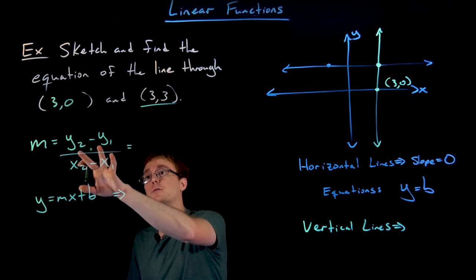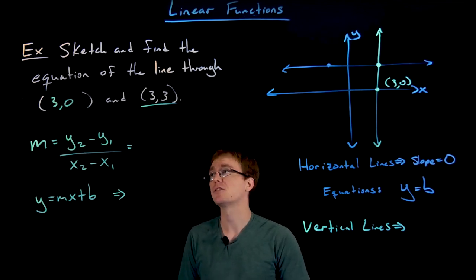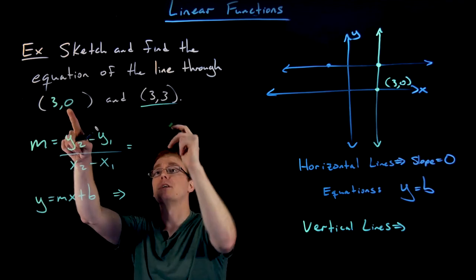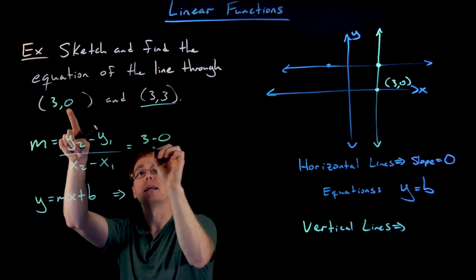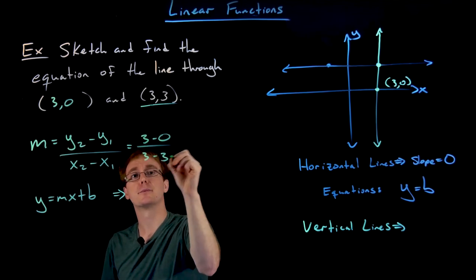We have to do the difference between the y values divided by the difference or the change between the x values as we move from point to point. The difference between our y values is going to be 3 minus 0, and the difference between our x values is going to be 3 minus 3.